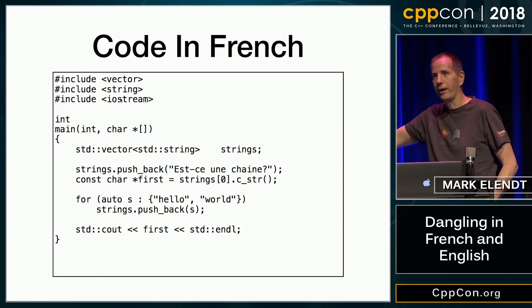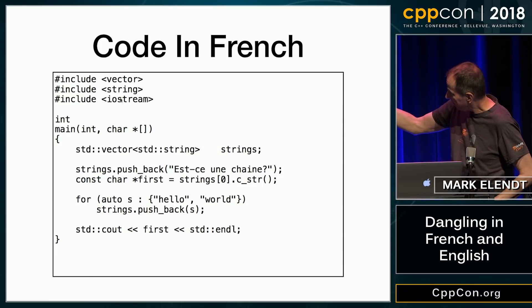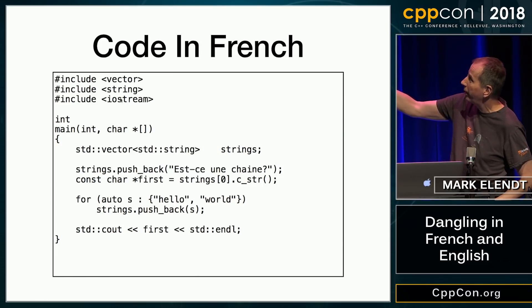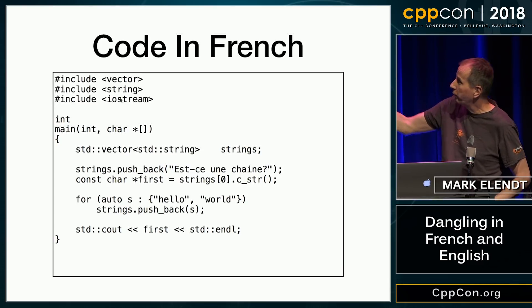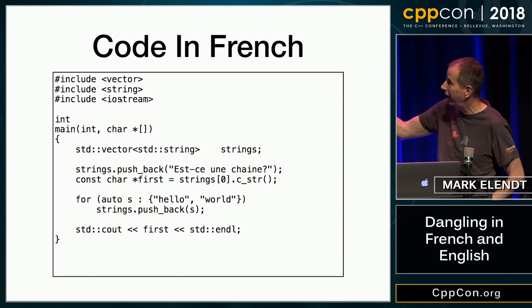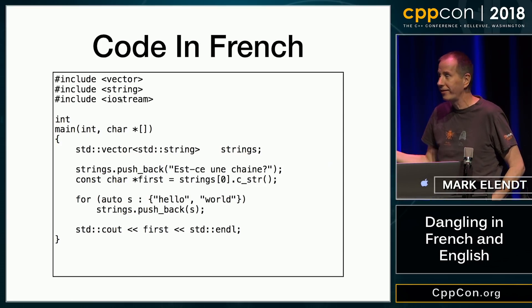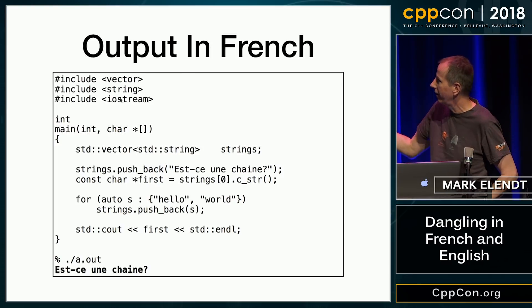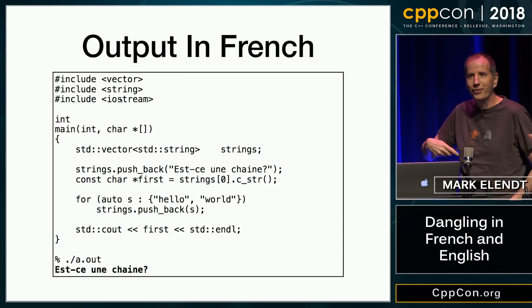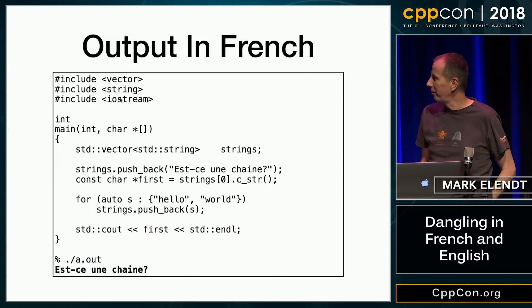The French text, if you don't speak French, translates — well, at least Google tells me — it translates to: 'Is this a string?' And then we grab a reference to that first string, and then we push back 'hello world', and then we cout the first string with endl. And of course, when you run this, it outputs 'Is this a string?' — I can't speak French, I was supposed to learn it in high school.